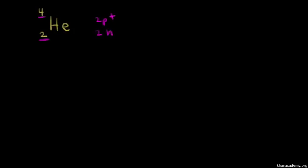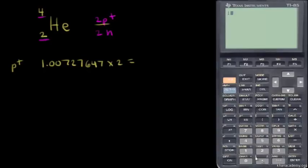If we know the mass of a proton and the mass of a neutron, we could easily calculate the expected mass of a helium-4 nucleus. The mass of a proton in AMUs — atomic mass units — is equal to 1.00727647. And we have two protons, so we need to multiply this number by two. Let's go ahead and get out the calculator.